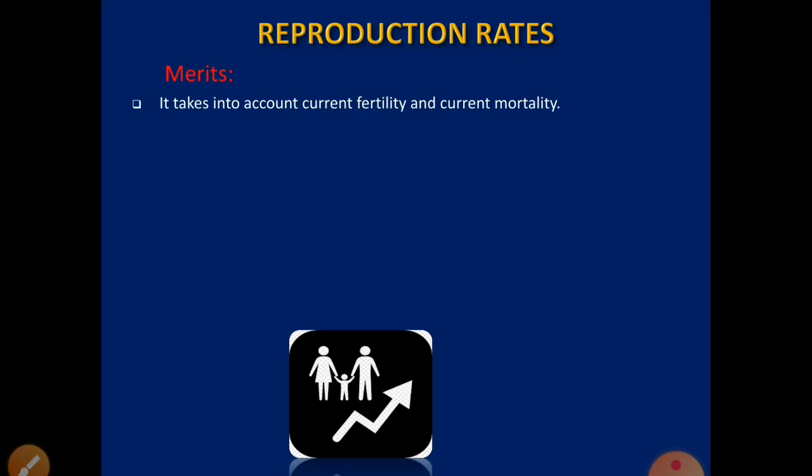The merits of NRR are: First, it takes into account both current fertility and current mortality — it considers both current birth rate and current death rate. Second, it will show a tendency of increase or decrease in population; NRR shows the current trend of population, whether it is increasing or decreasing.